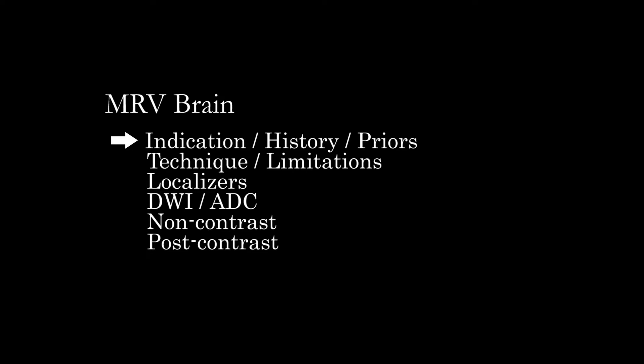Once you have an understanding of what's going on with the patient and have looked at all priors, we're going to take a look at the study as a whole — see what sort of technique was used and what sequences are available. It's always good practice to go through localizers, assess DWI-ADC as usual, and then go through any time of flight or phase contrast pre-contrast MRV images, and then look at the dynamic post-contrast images.